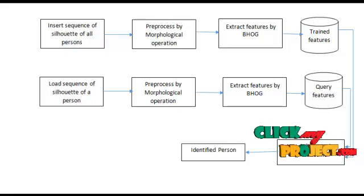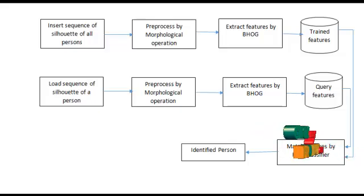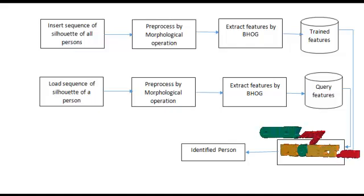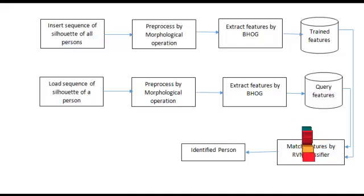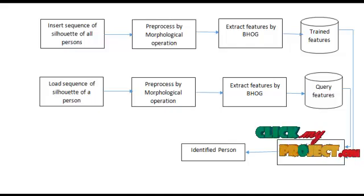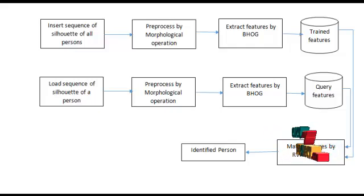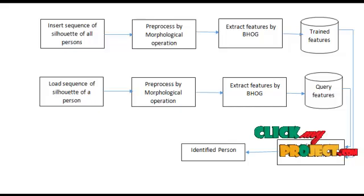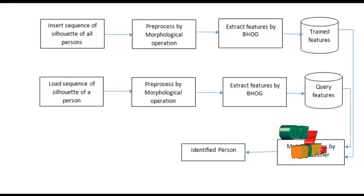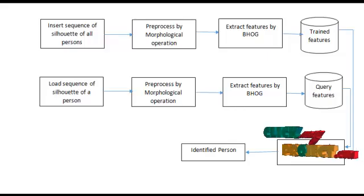The query feature values and the trained feature values are compared by the RVM classifier. The RVM classifier classifies the query feature against the training feature. After the matching process, it retrieves the result as matched or non-matched. If it is matched, it returns the result identifying the person — for example, this is person 1's silhouette or this is person 2's silhouette. This is the result of the project.